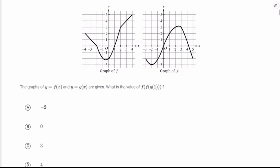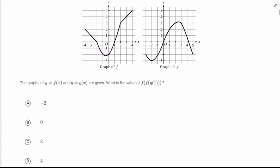Number 9: a nice old-fashioned composition of functions — but it's three layers. g(1) = 2 from the graph of g. Now f(f(g(1))) means f(f(2)) = f(3) — that's the sharp corner — and then f(f(g(1))) = f(3) = 4. So the answer is 4.